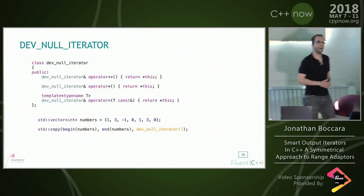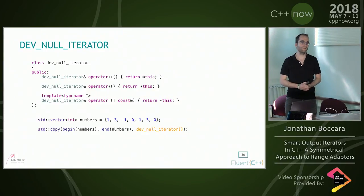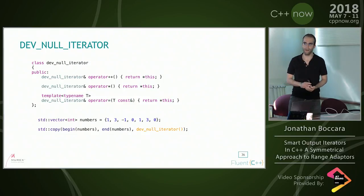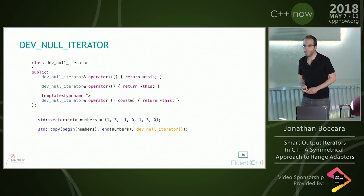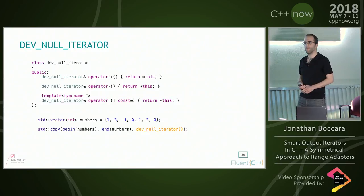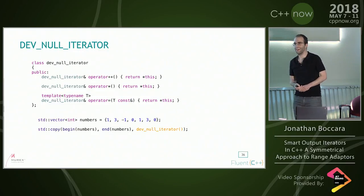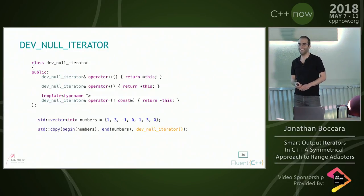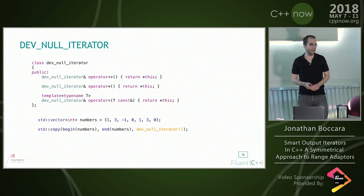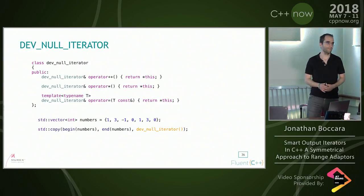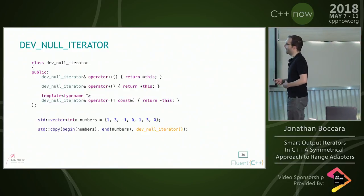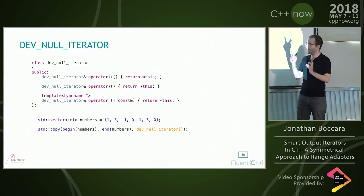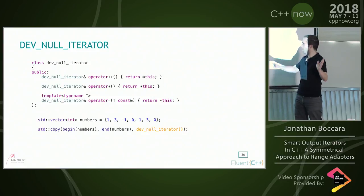How can that be useful? It saves you from using a condition — you're somewhere down in the code and it was passed in from above. Also, for algorithms that have two output iterators, if you don't care about one of the outputs, you can send it to DevNull. Like partition_copy — it takes an input range, a predicate, and two output iterators, sending data satisfying the predicate to the first and data that doesn't to the other. You can send one output to DevNull.